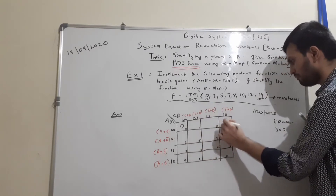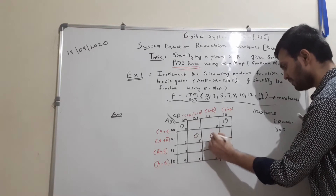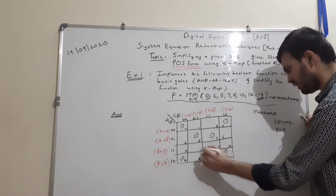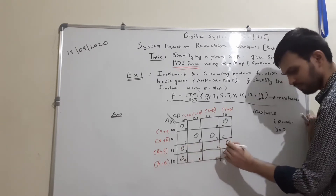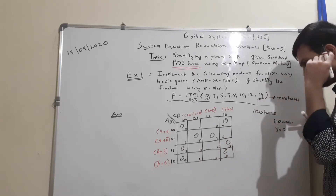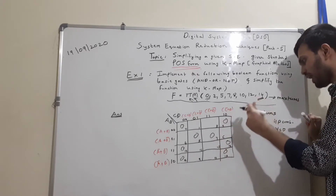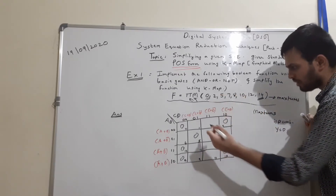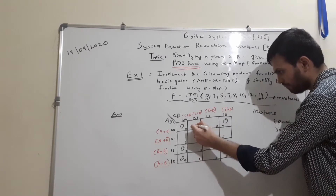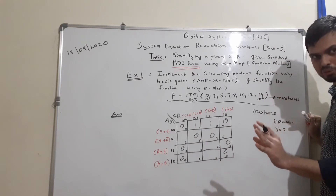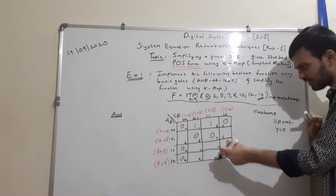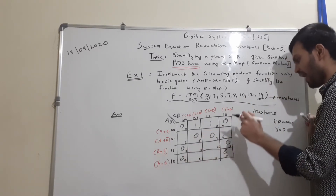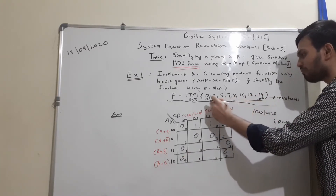We fill max term 2 with 0, then 5, 7, 8, 10, 12, and 14 — all filled with 0. Whatever terms are not present in the max term list are min terms. So we fill the remaining cells with 1, because in any logic circuit there are only 2 possible outputs, and we are filling the outputs of a digital circuit in the KMAP.